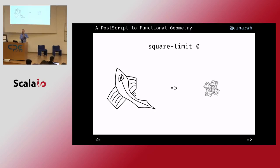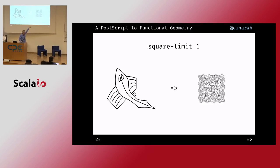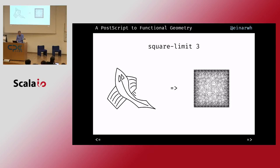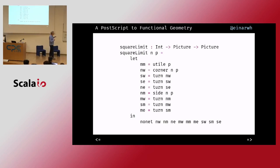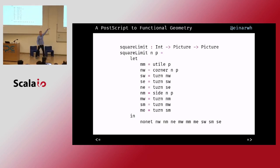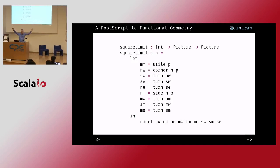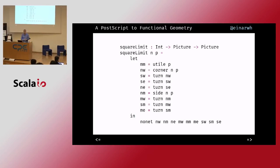That's really all we need for the square limit. I start with the u-tile and then have variations of corner and side, which allows growing outward. With these functions defined, defining square limit itself is quite straightforward: the u-tile, four variations of a corner, four variations of a side, then compose them into a 3x3 grid.